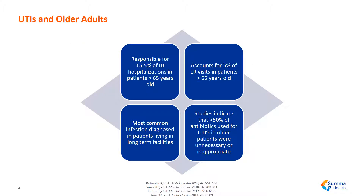Urinary tract infections in older adults are responsible for up to 15.5% of infectious disease-related hospitalizations in patients at least 65 years and older. It also accounts for 5% of emergency room visits in the same patient population. It is the most common infection diagnosed in patients who reside in long-term care facilities. Studies have indicated that up to 50% of antibiotics used for urinary tract infections in older patients were deemed unnecessary or inappropriate.